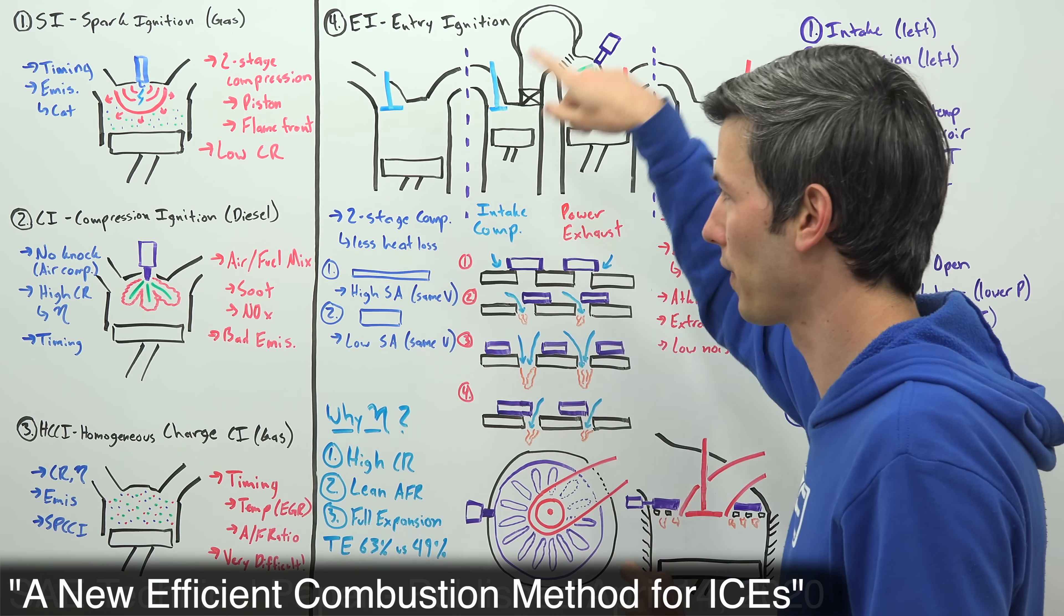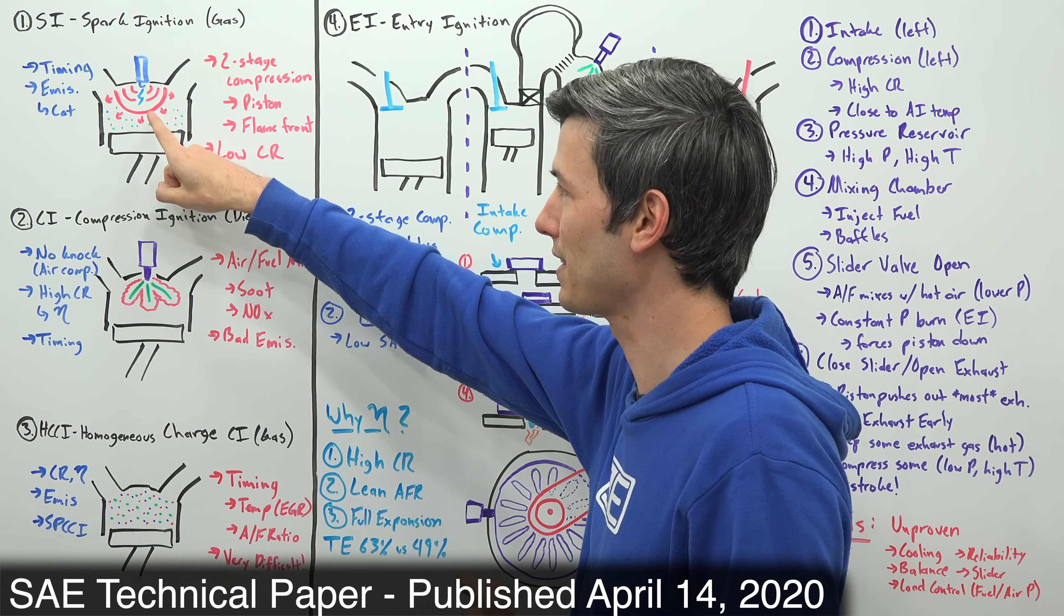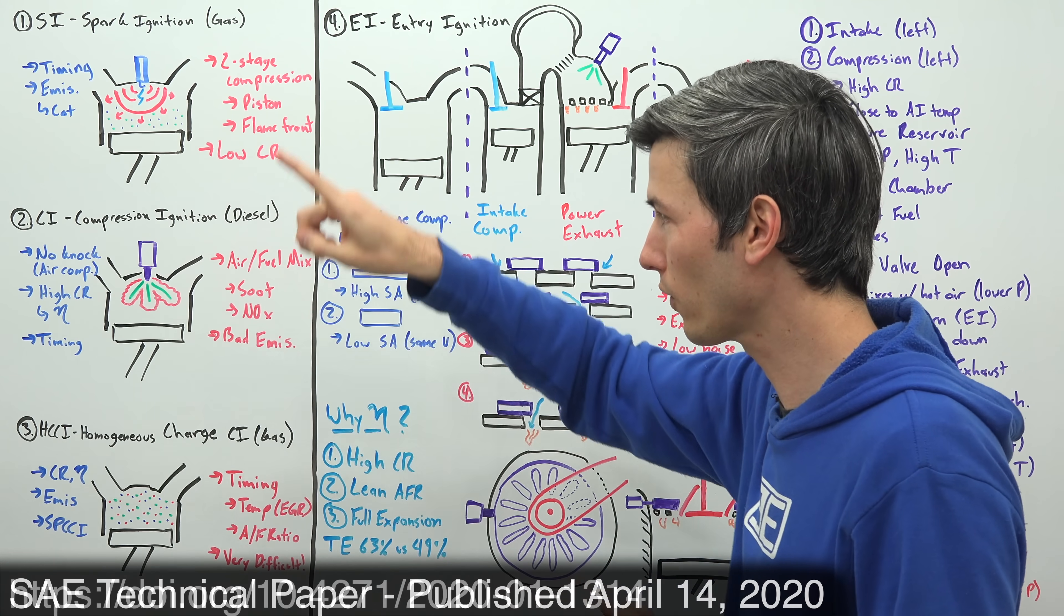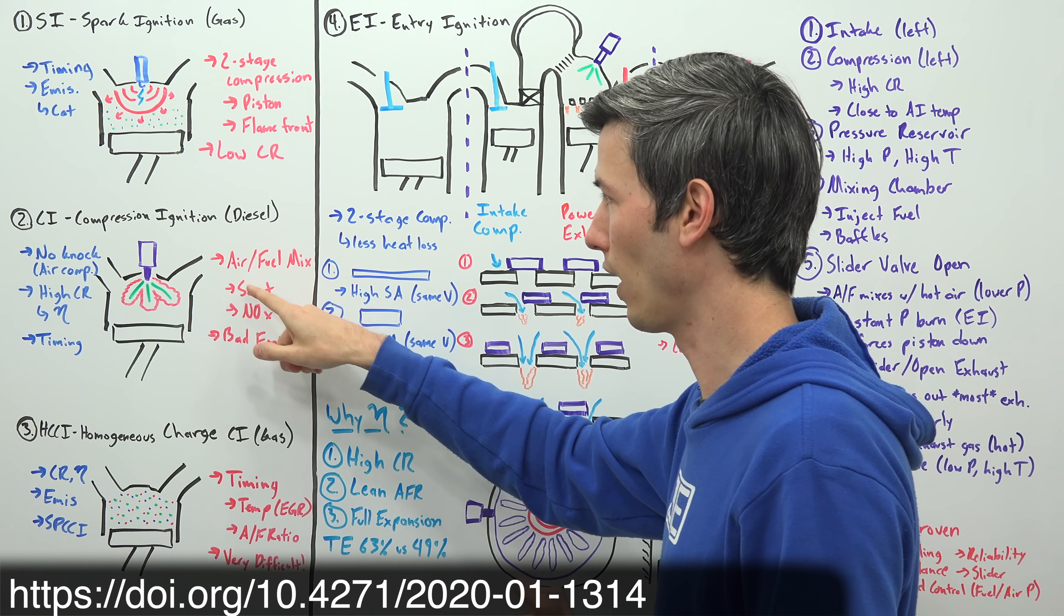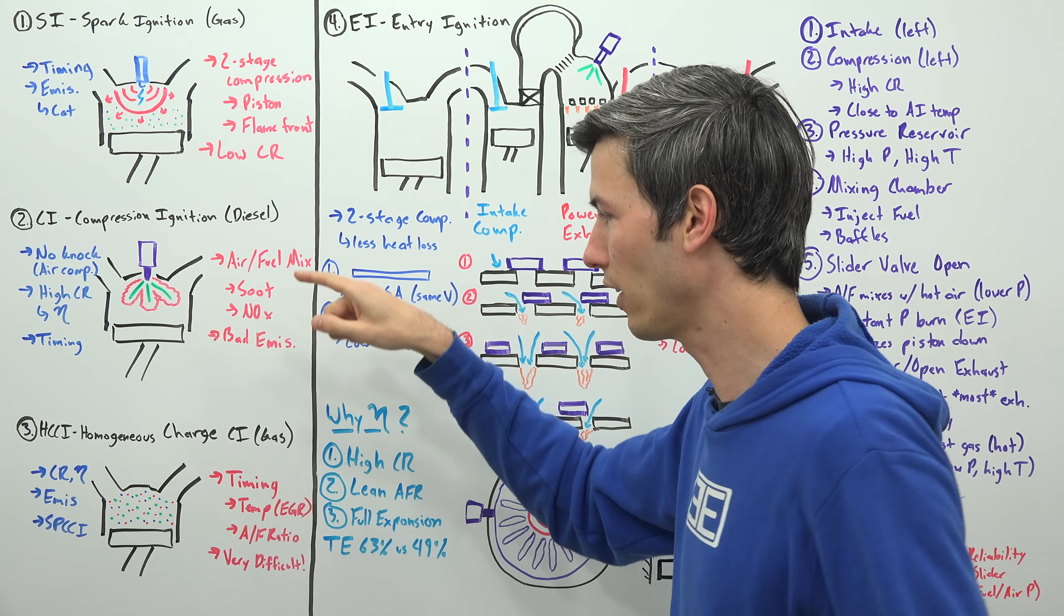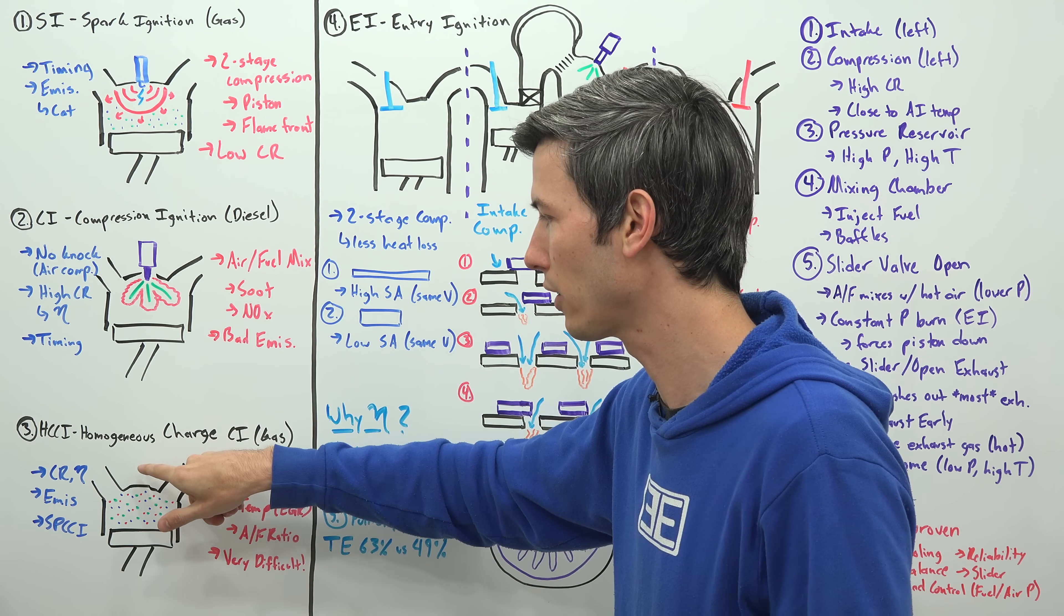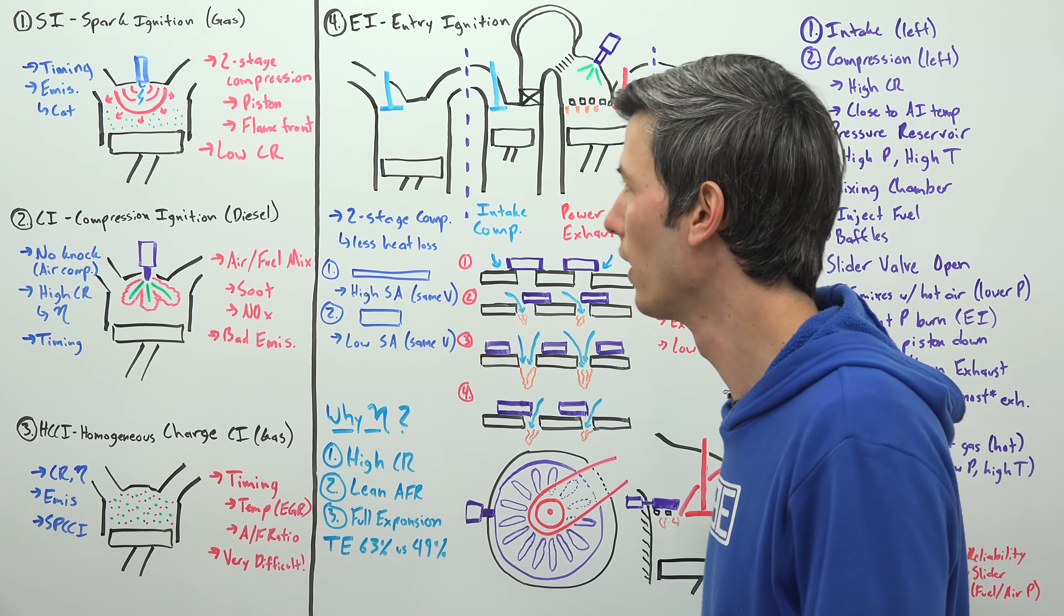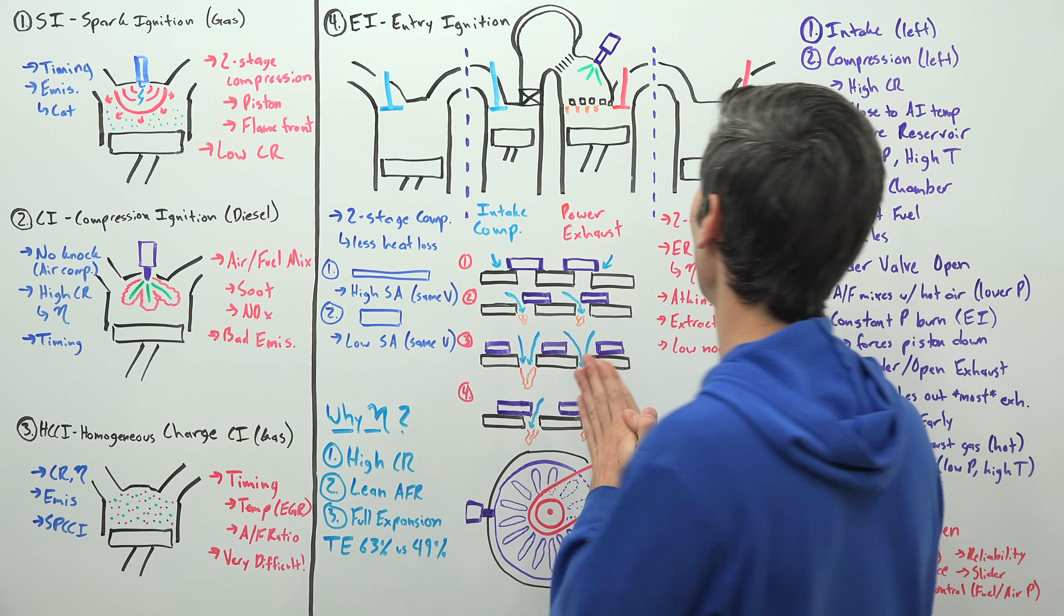So along comes entry ignition with the goal of eliminating this second stage of compression from combustion occurring, also eliminating this uneven air fuel mixture, so to have a nice air fuel mixture, and then also providing a complete control switch for when you have that combustion begin. So entry ignition, how does it work?